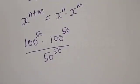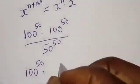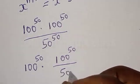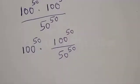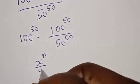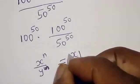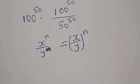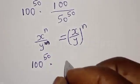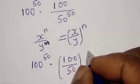Then we have 100 raised to power 50 multiplied by 100 raised to power 50, over 50 raised to power 50. This can be expressed as 100 raised to power 50, multiplied by 100 raised to power 50 divided by 50 raised to power 50. Remember that if you have s raised to power n divided by y raised to power n, that is the same thing as s over y raised to power n. Then we have 100 raised to power 50 multiplied by 100 divided by 50, raised to power 50.